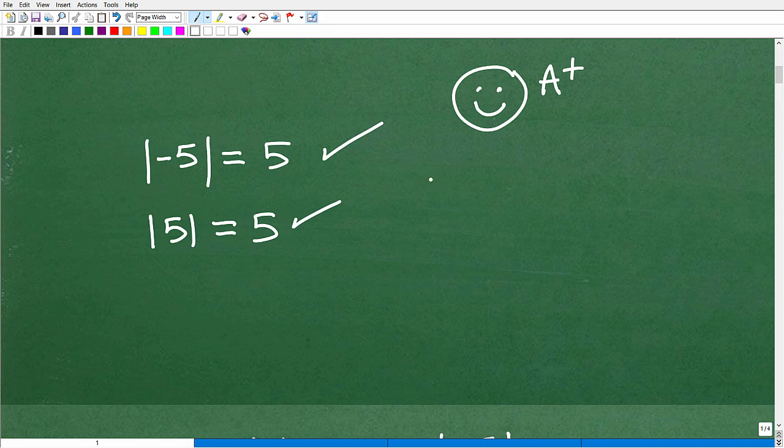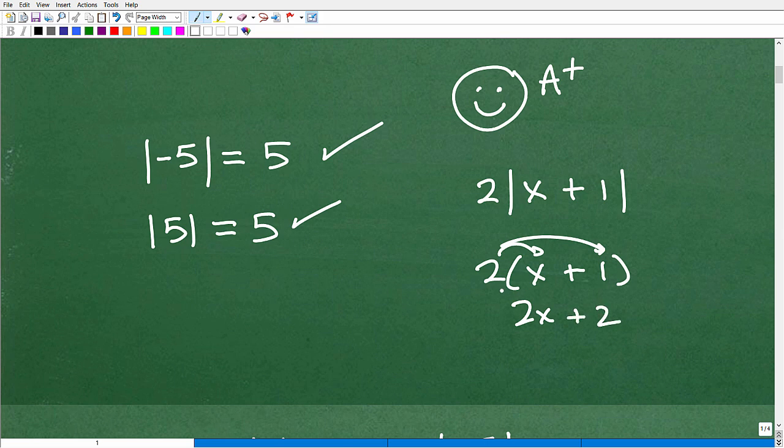Let me show you a couple things here about absolute value that is not the case. So let's say I had the absolute value of x plus one. What you can't do with absolute values - this is not like a parenthesis. Absolute values are not like a parenthesis where you can use the distributive property. So like two times parenthesis x plus one, this is two x plus two. This is correct. This is parentheses, a grouping symbol.